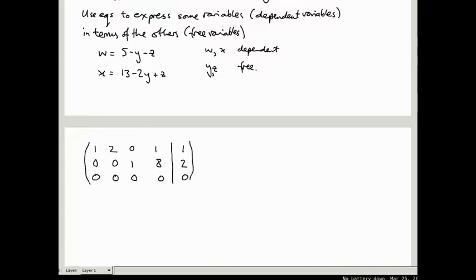Okay, what are the system, what are the three equations that correspond to this augmented matrix? It's W plus 2X plus Z equals 1 and Y plus 8Z equals 2 and the third one is just 0 equals 0, which is fine. Alright, that's automatically true. We can kind of ignore this final equation.